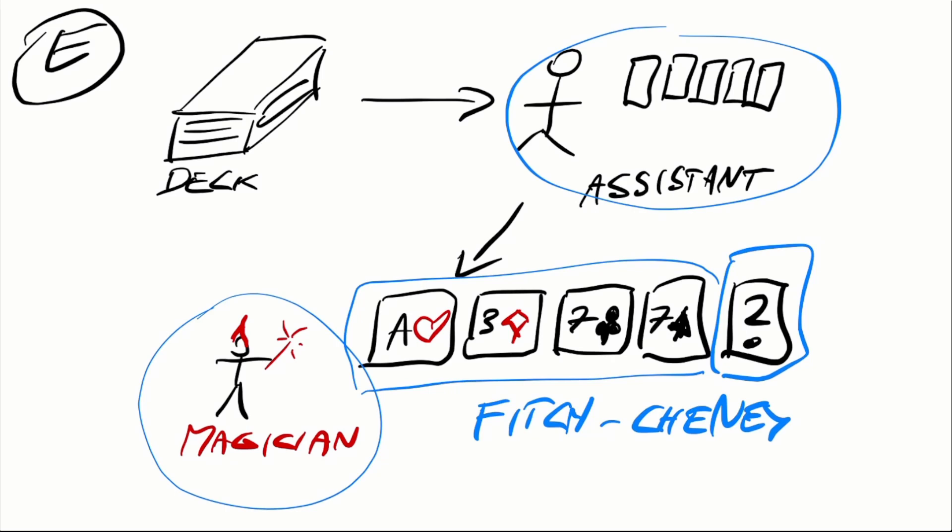Why is this the case? Well, because at first glance what you have here are four visible cards. The assistant can choose a permutation of these four cards, but this gives you only 24 possibilities. But the deck has 52 cards, so there are 48 possibilities for the hidden card. So how do you encode the extra bits you need to tell what the extra card is?